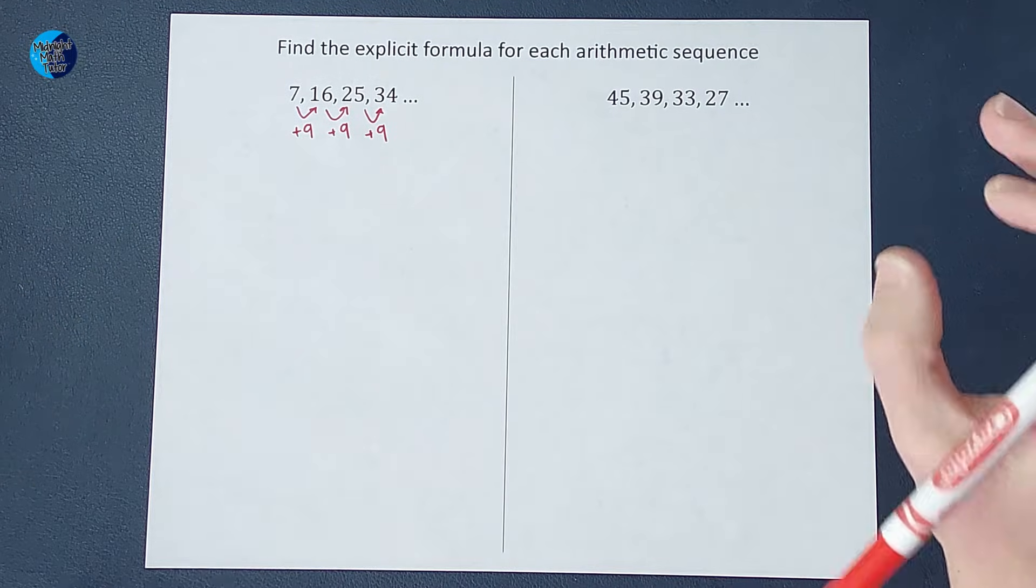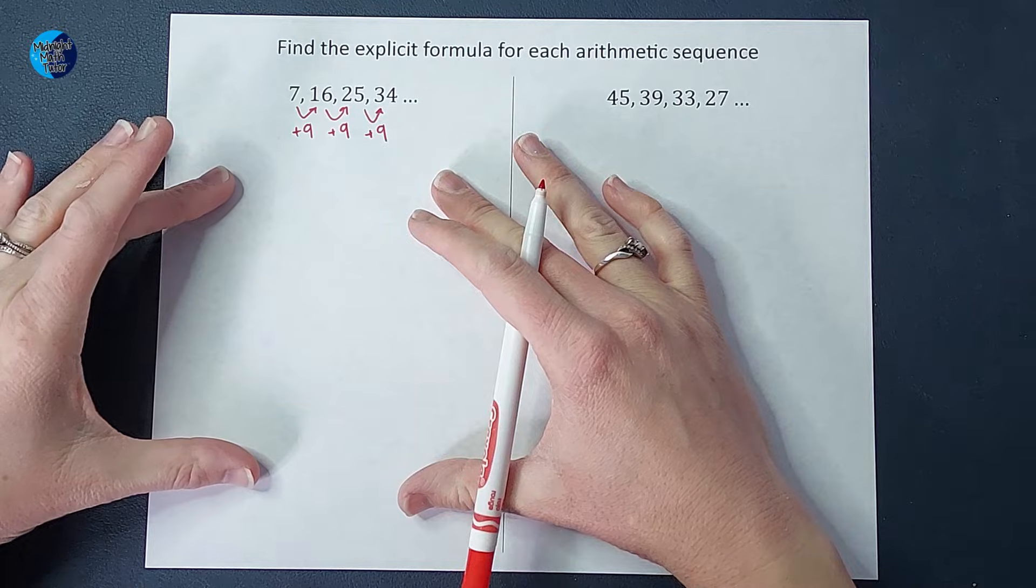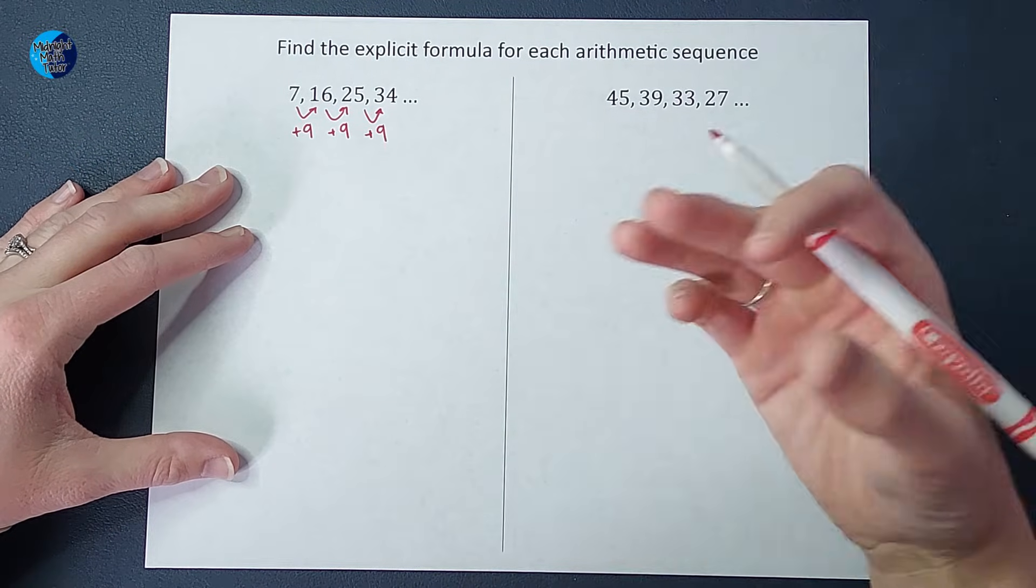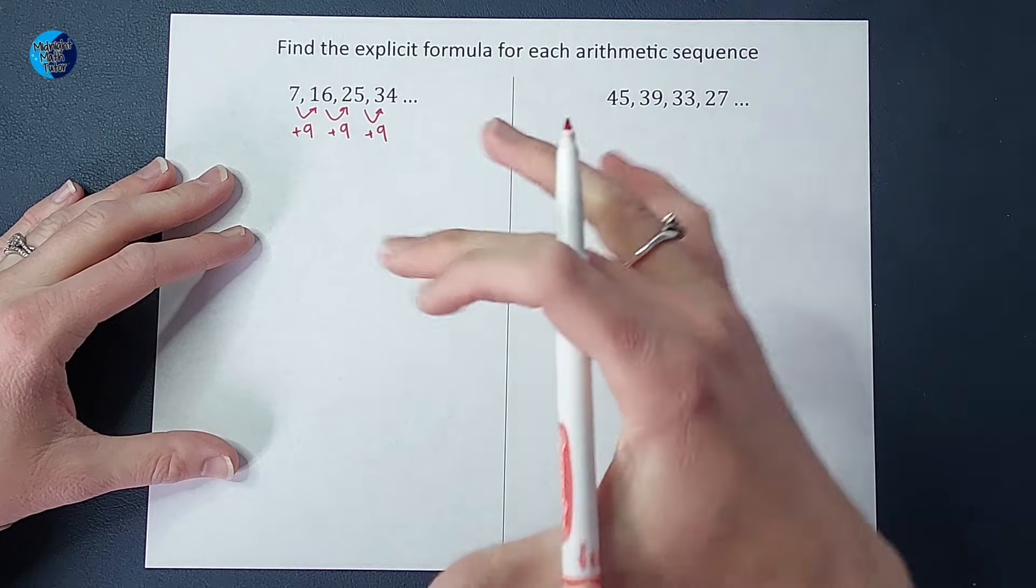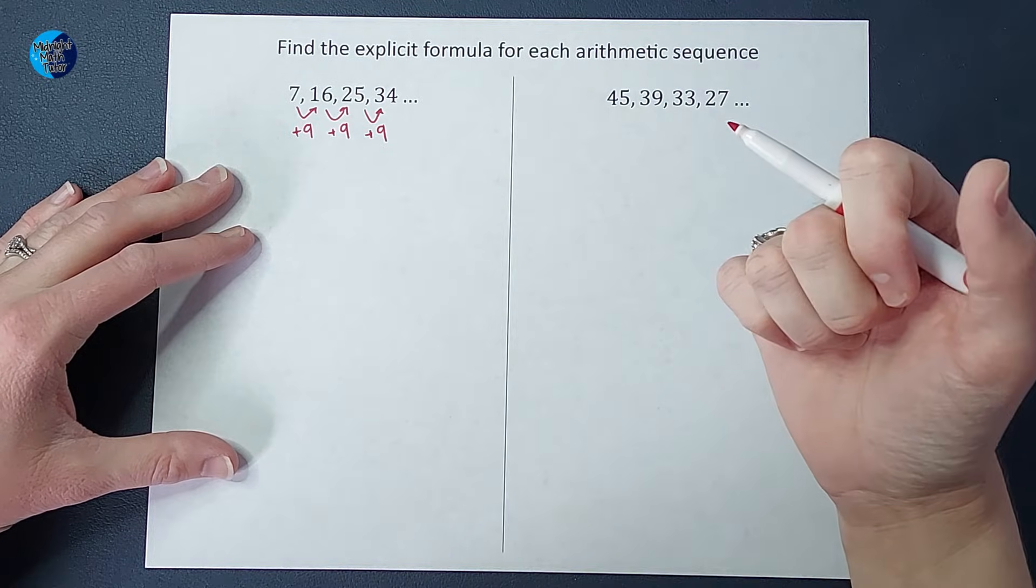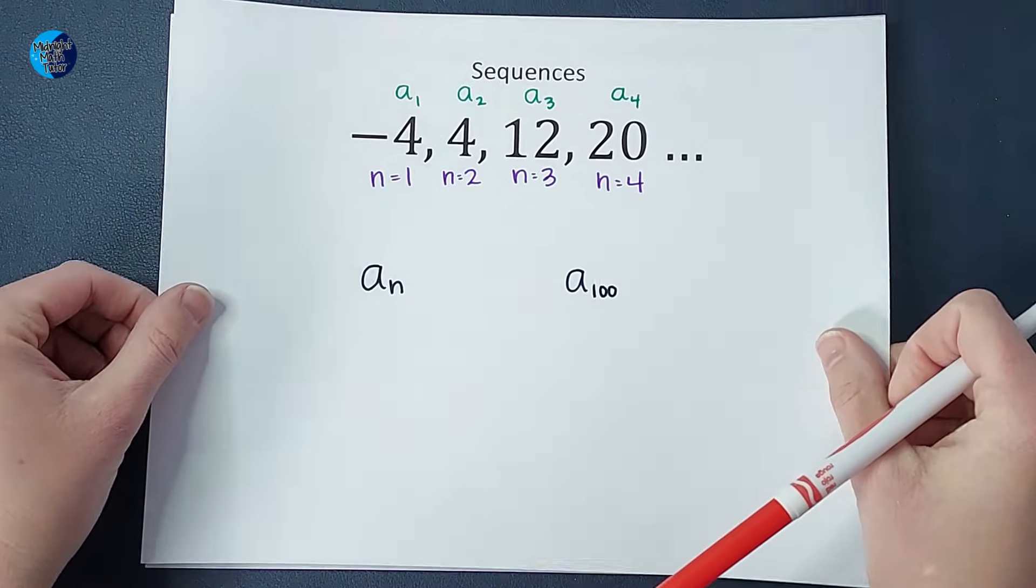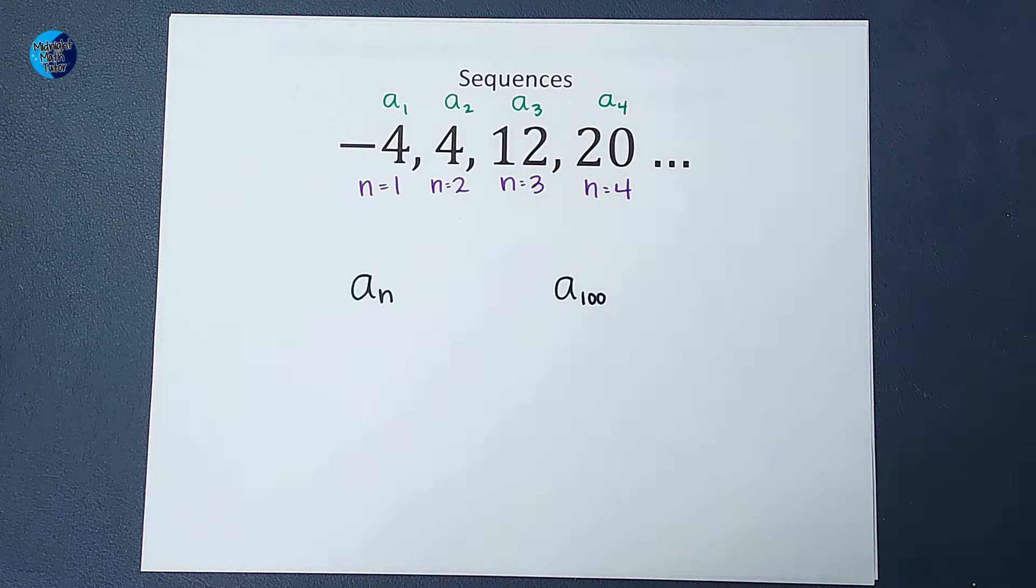So the explicit formula that I make, I want a formula that someone can plug in. I want to know the hundredth term in this sequence. They can plug it in and get it by using the formula. Now before we do that, there's a little bit of terminology we need to go over and then it falls into place pretty quickly.